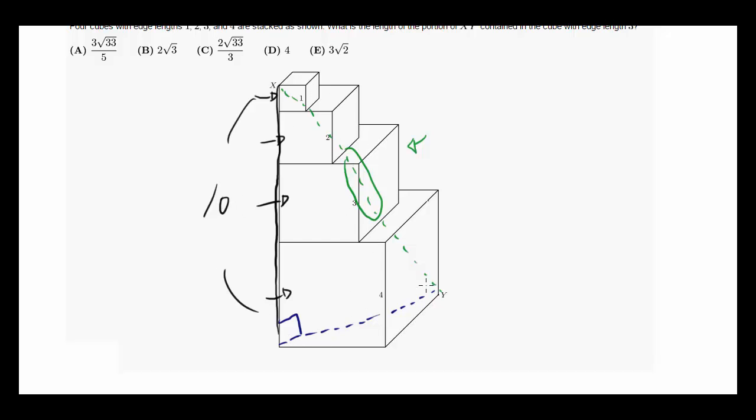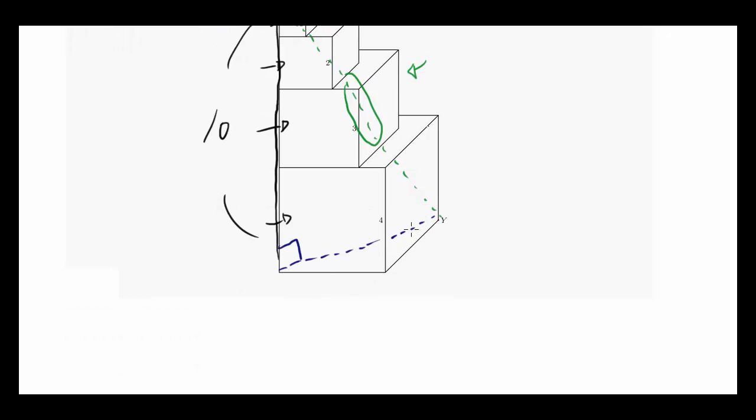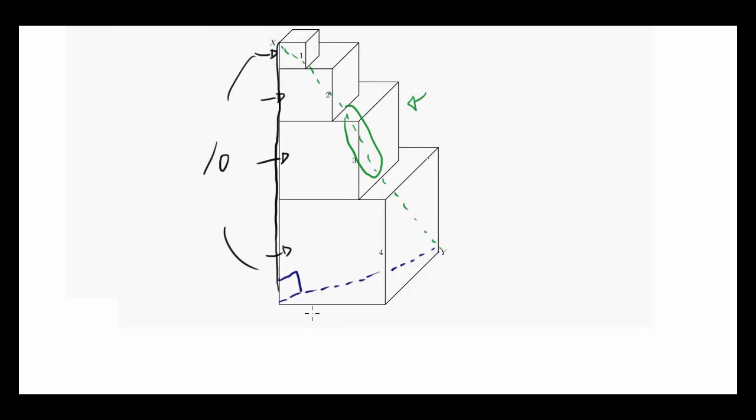How about this? How about the length of the blue line? Well, we know length of this is 4, we know length of this is 4, and that's 90 degrees. So that's a 45-45-90 triangle, and the length is 4 times square root of 2.